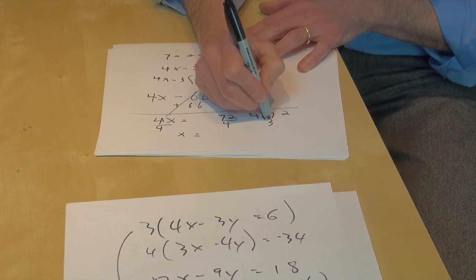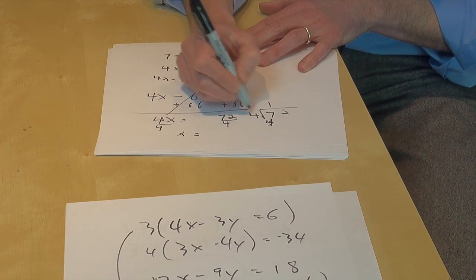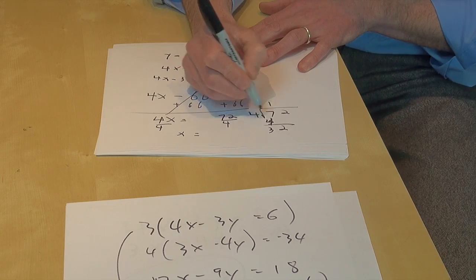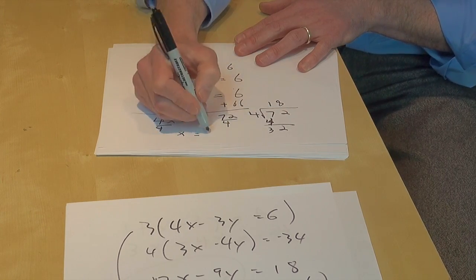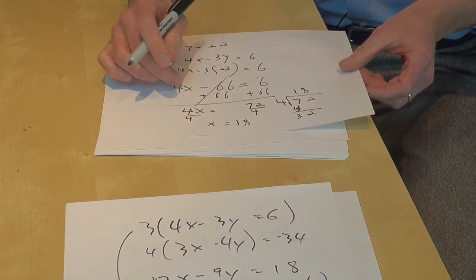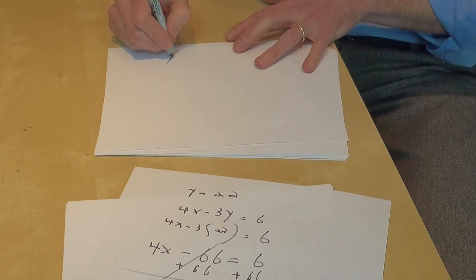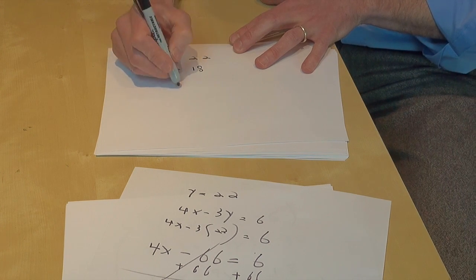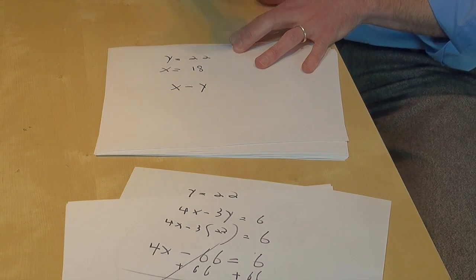How do I get x? Divide by 4. Do it on a calculator, long division, whatever you like. 72 divided by 4 equals 18. So x is 18. Next page, we had y is 22, we had x is 18.